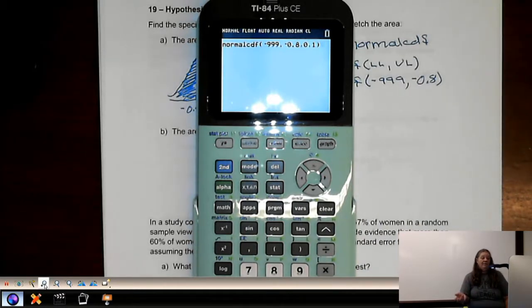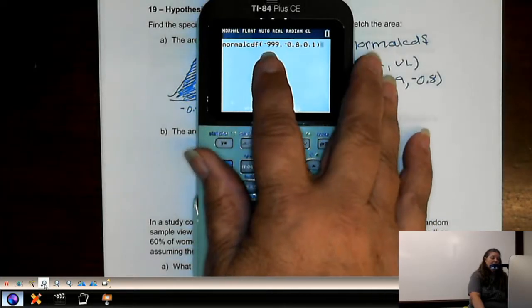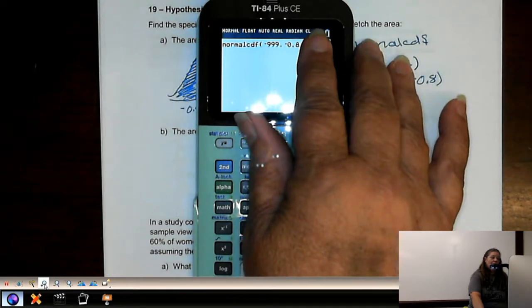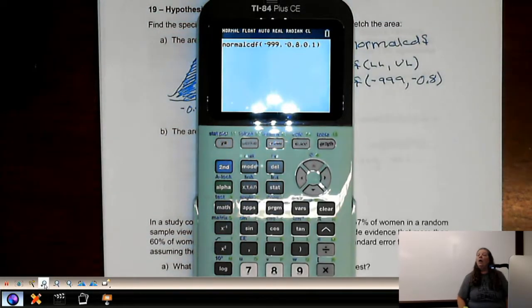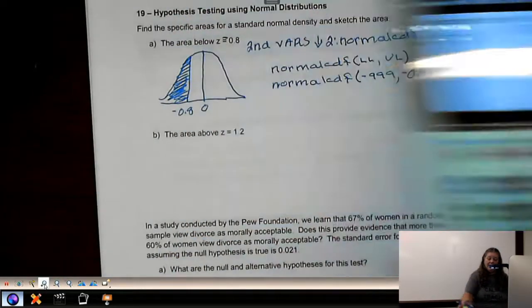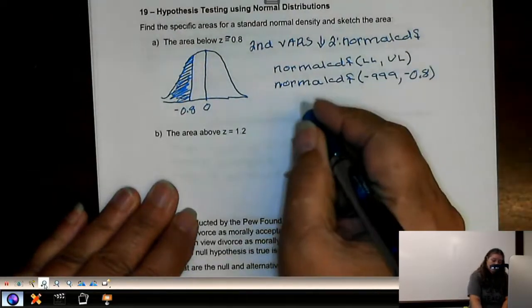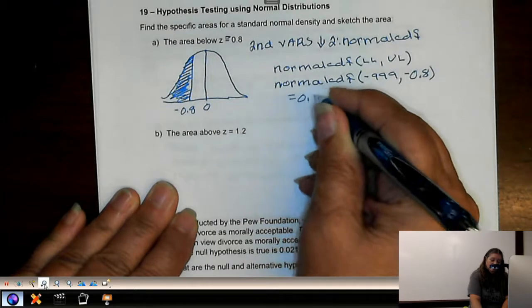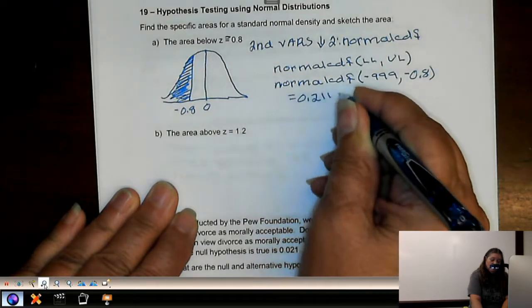If you just have to put it in linearly, you would put negative 999 and negative 0.8. And you don't have to enter the 0 and 1 because it's understood that that's what it is, if nothing's entered. So we hit enter, and we get that the area is 0.2119. So this is 0.2119.